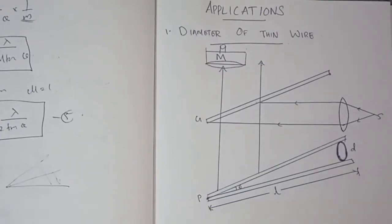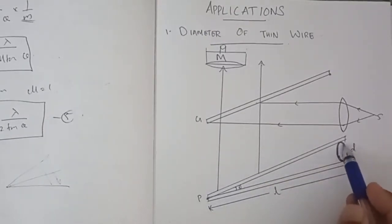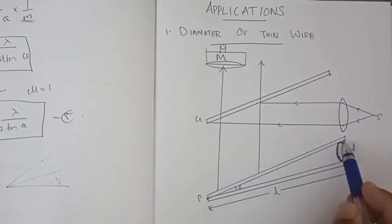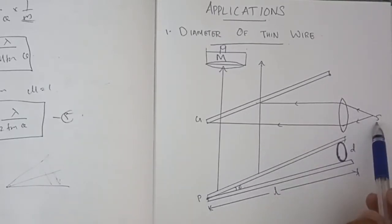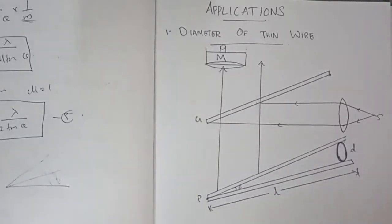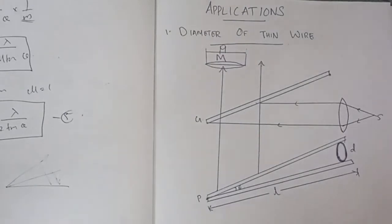We are going to talk about diameter of thin wire. We are going to set up an experimental setup. We have two glass plates. We are going to place a wire between them. This creates an air film. We use monochromatic light and we have to observe the interference pattern.